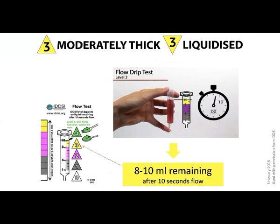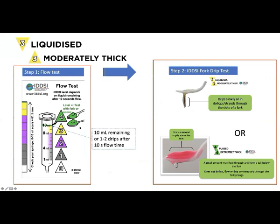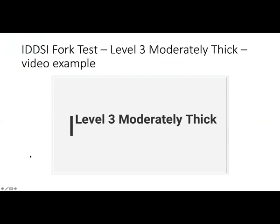For Moderately Thick: if you have exactly 10 ml left — i.e. it doesn't flow — or just one to two drips after 10 seconds, do the IDDSI fork drip test as a second step. If it's dripping slowly, in dollops, or in strands, it's at the top end of Moderately Thick. If it mounds above the fork with a little tail below, it's Extremely Thick. Some products may fall between levels, so you may need to thicken or thin accordingly. For Mildly Thick: 4 to 8 ml remaining. If it falls exactly on the 8 ml or 4 ml boundary, it's neither Level 2 nor Level 3, and you need to adjust.